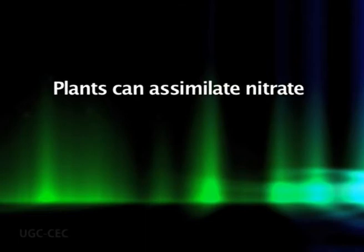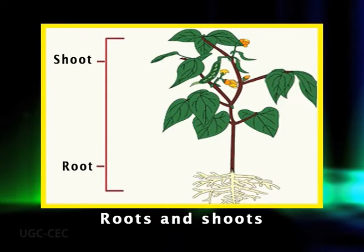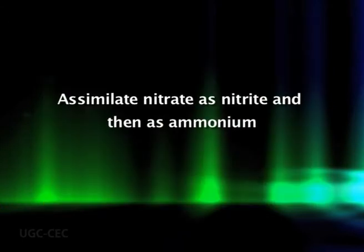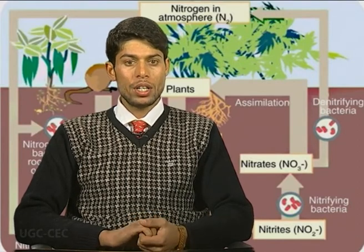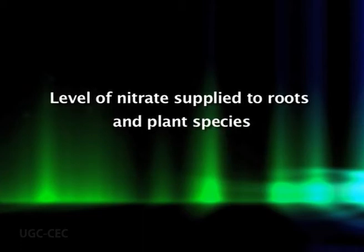Nitrate and light induce the transcription of nitrite reductase mRNA. Plants can assimilate nitrate in both roots and shoots. In some plant species, both roots and shoots have the capacity to assimilate nitrate as nitrite and then as ammonia. The relative extent to which nitrate is reduced in the roots or in the leaves depends on several factors, including the level of nitrate supplied to the roots and the plant species. In many plants, when the roots receive a small amount of nitrate, it is reduced primarily in the roots.